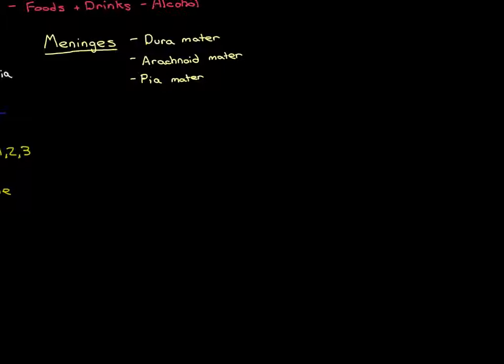Rather than starting with the outermost dura mater and working inwards, I'm going to start with the innermost one — the pia mater — because it's by far the easiest to understand. The most difficult one is the dura mater, because it has two separate layers, which allow for the formation of dural folds and dural venous sinuses — complicated structures we'll talk about later. The pia mater, on the other hand, is incredibly easy to understand.